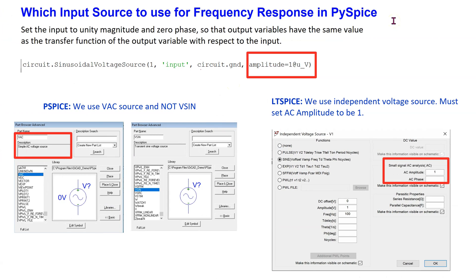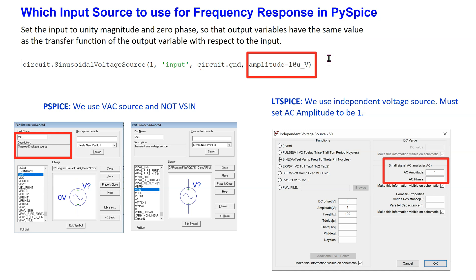Selecting and calibrating the input source is necessary in order to simulate the frequency response correctly. In PSPICE we use the VAC source when simulating frequency response. In LTSPICE, we still use the independent voltage source but must set the AC amplitude to 1. In PySpice, there is no special AC source — we still use the sinusoidal voltage source, and the only thing to ensure is that the amplitude is set to 1 volt to give a calibrated transfer function at the output.